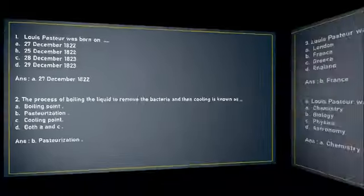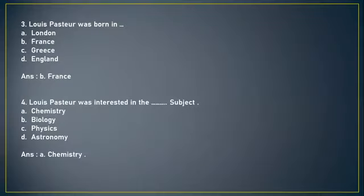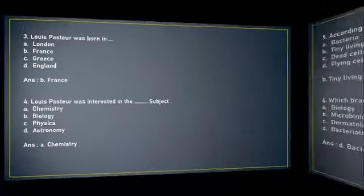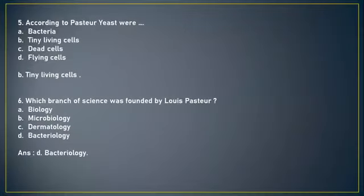Next: Louis Pasteur was born in (A) London, (B) France, (C) Greece, or (D) England. The answer is option B, France. Next question: Louis Pasteur was interested in which subject? (A) Chemistry, (B) Biology, (C) Physics, or (D) Astronomy. The answer is A, Chemistry.